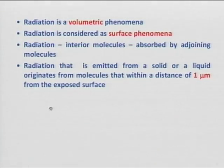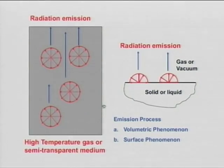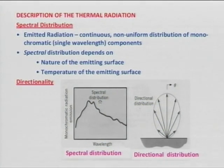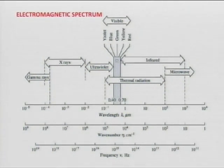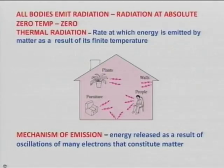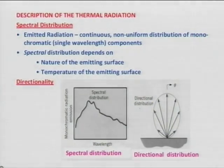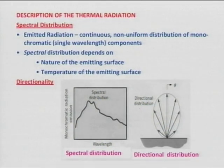Now, radiation is a volumetric phenomenon, but we assume it is a surface phenomenon and proceed on that basis. Thermal radiation has direction and is also dependent on wavelength. Within the thermal radiation band — ultraviolet, infrared, visible — each has a different wavelength. So the emitted radiation is dependent not only on direction but also on wavelength. For wavelength we use the term 'spectral distribution'; for direction, 'directionality.' We have to worry about both spectral and directional distribution.